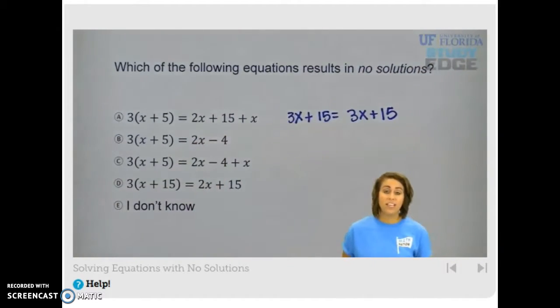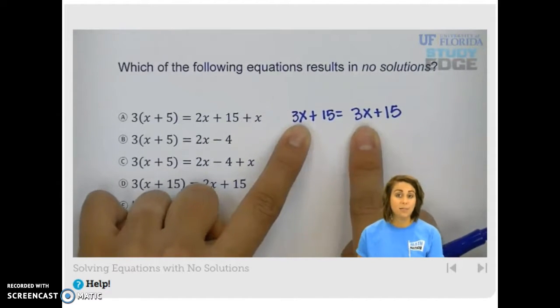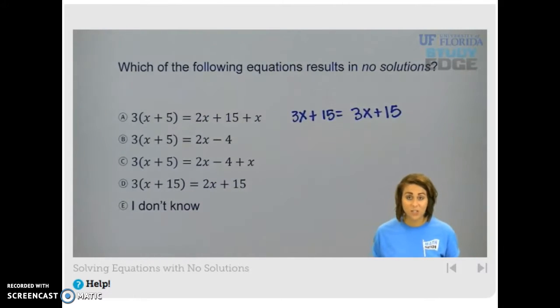Now we know if we have the exact same thing on either side that we're going to have infinitely many solutions, which means any number that we plug in for x here, it's going to be the same number we plug in for x here, and we're always going to get an answer that's equal to the other side of our equation.